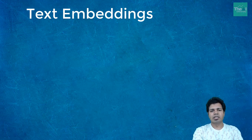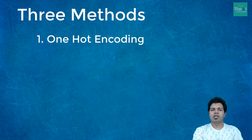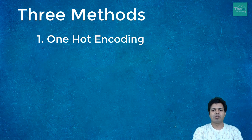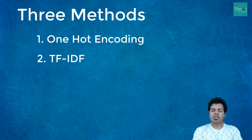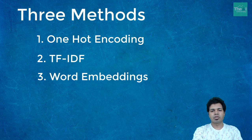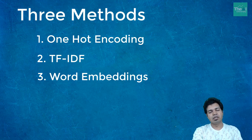We will study three methods in detail. The first is one-hot encoding, which I've already covered in a previous video — you can find the link above if you haven't seen it. The second method is TF-IDF, where TF stands for term frequency and IDF stands for inverse document frequency. The third and most popular method, commonly used in machine learning models built with neural networks, is word embeddings. I'll cover TF-IDF and word embeddings in the next subsequent videos.